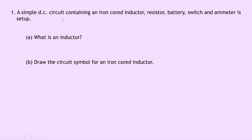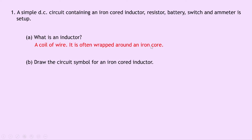Question one says a simple DC circuit containing an iron core inductor, resistor, battery, switch and ammeter is set up. Part A says what is an inductor? Well an inductor is simply a coil of wire. It is often wrapped around an iron core. And if it is wrapped around an iron core, we call it an iron core inductor, but if it's not then we simply call it an air core inductor.